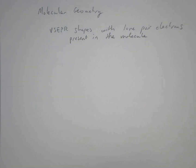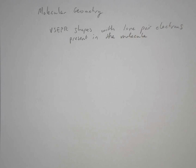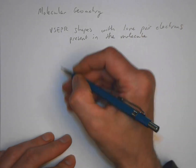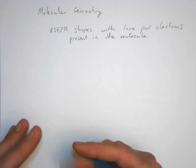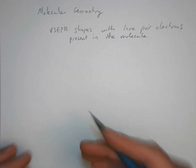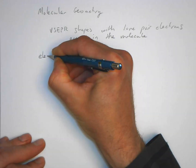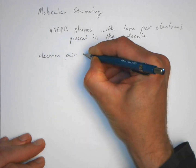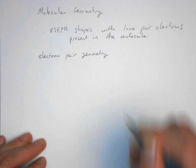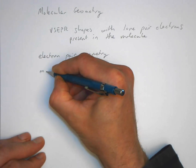Next we're going to look at molecular geometries using VSEPR. We're going to look at shapes of molecules when there are lone pairs of electrons present within the molecule. Before we start, I'm going to define a couple of terms: the first is going to be the electron pair geometry, and the second is going to be the molecular geometry.